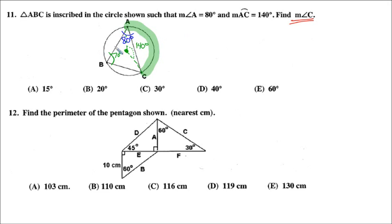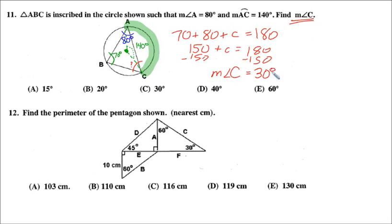We wish to find the measurement of angle C. We know that in any triangle, the sum of the interior angles must be 180. So we can set up an equation: 70 plus 80 plus C equals 180. 70 and 80 is 150 plus C equals 180. Subtract 150. The measurement of angle C equals 180 minus 150, which gives you 30 degrees C.